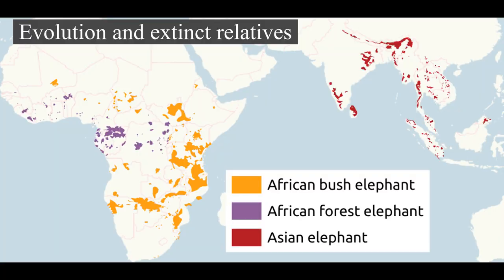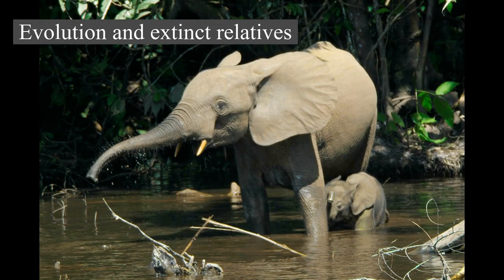Mammuthus and Elephas diverged later during the early Pliocene. Loxodonta remained in Africa while Mammuthus and Elephas spread to Eurasia, and the former reached North America. At the same time, the Stegodontids, another proboscidean group descended from Gomphotheres, spread throughout Asia, including the Indian subcontinent, China, Southeast Asia, and Japan. Mammuthus continued to evolve into new species, such as the American Mastodon.